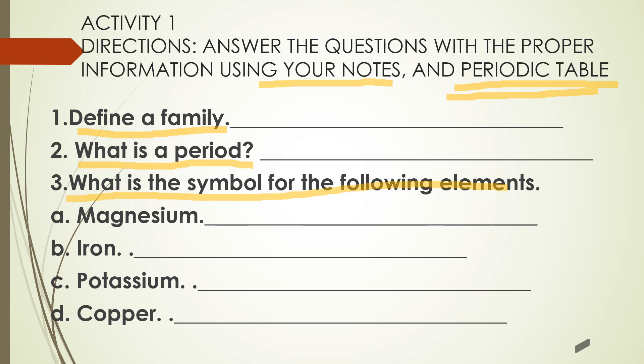Number three: what is the symbol for the following elements — magnesium, iron, potassium, copper. Take note, class: when you write the symbol of the elements, make sure the first letter should be capitalized or large, and then the second letter is small. Remember that.